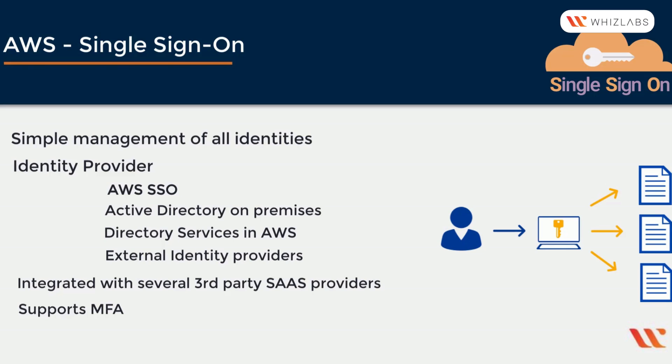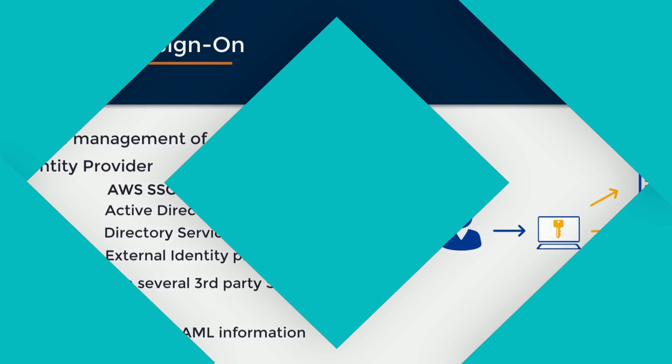AWS SSO supports industry-standard mechanisms for securely exchanging SAML information between the identity provider, like your Active Directory, and the relying party, like Salesforce or Office 365.